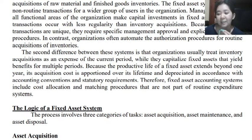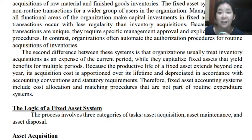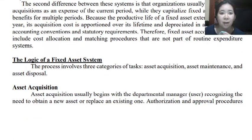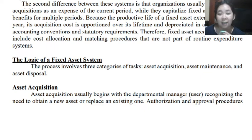Fixed assets accounting systems include cost allocation and matching procedures that are not part of the routine expenditure system. The matching principle means we recognize the expense once the benefit is also recognized for the same period. The process involves three categories: asset acquisition, asset maintenance, and asset disposal.